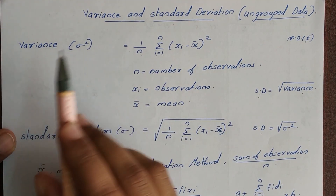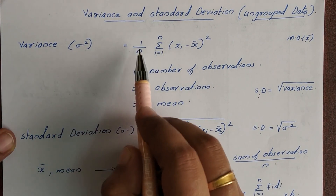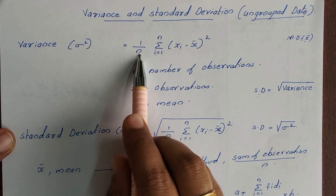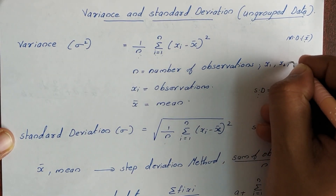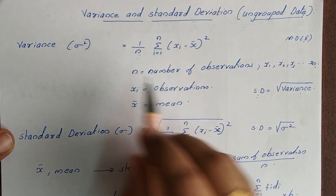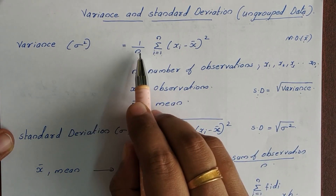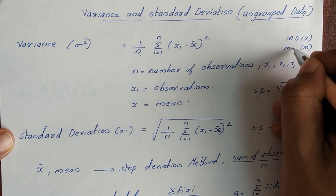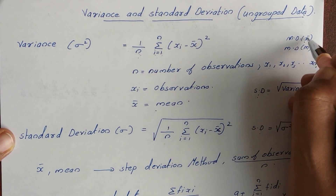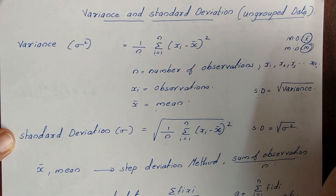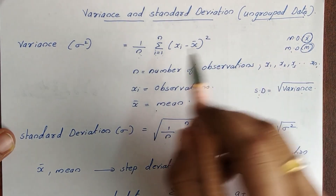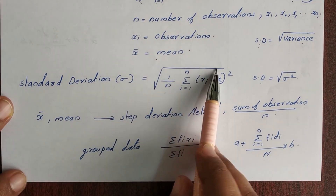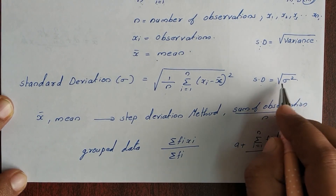The variance equation is: sigma squared equals 1 by n into summation i equals 1 to n of (xi minus x bar) the whole square, where n is the number of observations and x1, x2, x3, up to xn are the observations. The standard deviation sigma is equal to the square root of sigma squared.